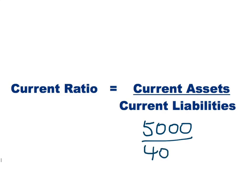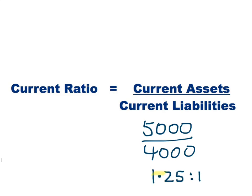That gives us a current ratio of 1.25 to 1. It's important not just to be able to work out what this number is, but also to explain what it means. Basically, this means that for every $1 of current liabilities, the business has $1.25 worth of current assets with which they can pay those liabilities.